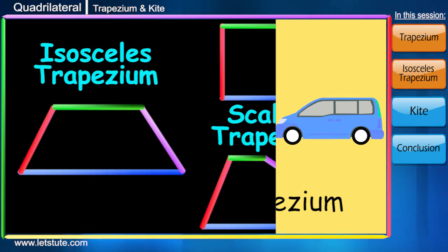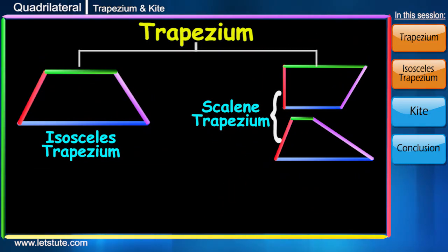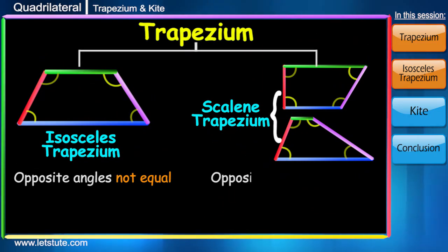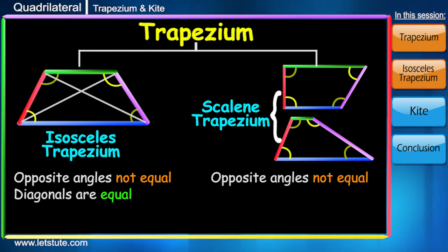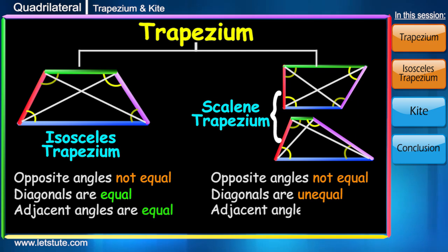Since it is a bit different shape than that of a parallelogram, its properties will also differ. Opposite angles will not be equal and diagonals may be equal as in the first case, that is in isosceles trapezium, or may not be equal like in any other trapezium. In isosceles trapezium, adjacent angles made by non-parallel sides are equal. In any other trapezium they are not.